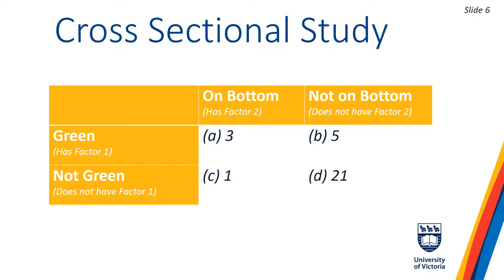On slide 6, we explore this question by filling in a 2x2 contingency table. A contingency table compares two factors by segmenting the study population contingent on each of those two factors. Cell A represents the number of green pieces on the bottom, cell B represents the number of green pieces not on the bottom, cell C represents the number of non-green pieces on the bottom, and cell D represents the number of non-green pieces not on the bottom. Using this basic table, we can now calculate a number of interesting measures.